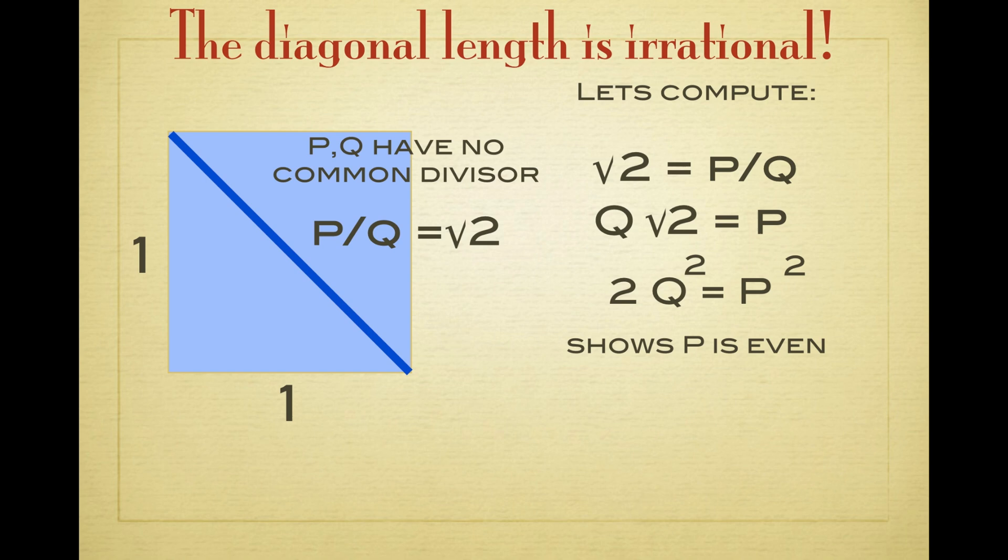So p is even, but p squared is divisible by 4, which means that also the left-hand side is divisible by 4, and this means q has to be even too. But now p and q both have a factor of 2, and so a common divisor, which is a contradiction.